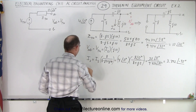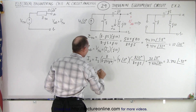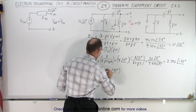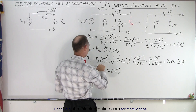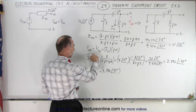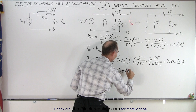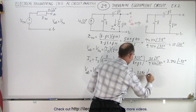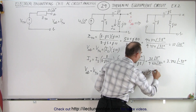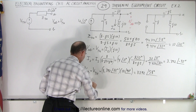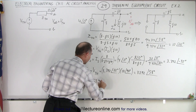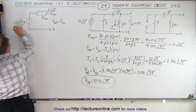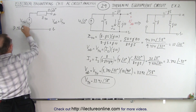Now to find the voltage from A to B, which is equal to the Thévenin voltage, which is equal to I2 — which is 3.392∠−32° — we multiply by j10, so that's 10∠+90°. Multiplying, we get 33.92 with a phase angle of 90 − 32 = 58 degrees. And that's the Thévenin voltage. So V_Thévenin equals 33.92∠58°.